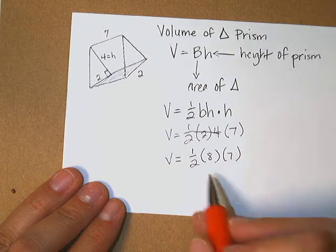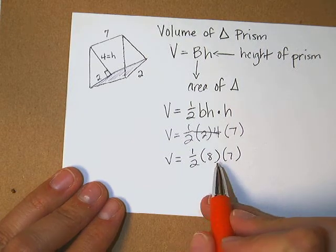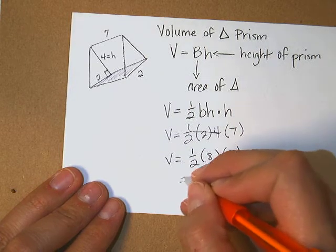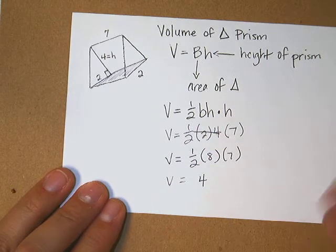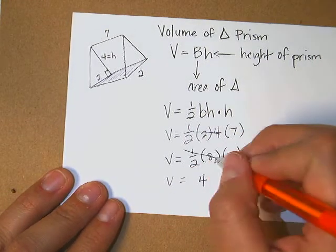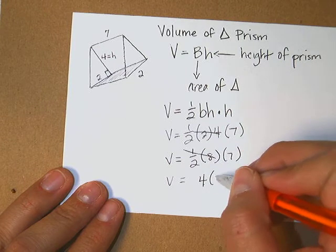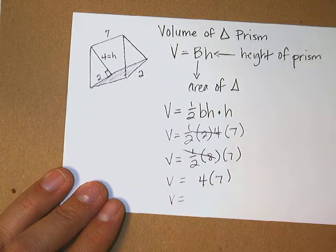And then I have 7. I can take half of 8. What's half of 8? 4. To me, that's easier than having to multiply by .5. So then I took half of 8, which is 4, and now I have 4 times 7. What's 4 times 7? 28.